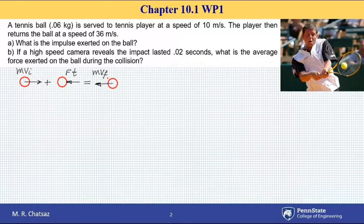One thing we are interested in is what is the impulse exerted on the ball. In part B, we want to know what is the impulsive force exerted on the ball during collision if the time of impact between the ball and the bat is 0.02 seconds.